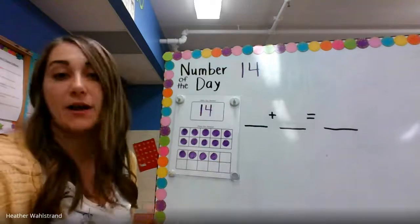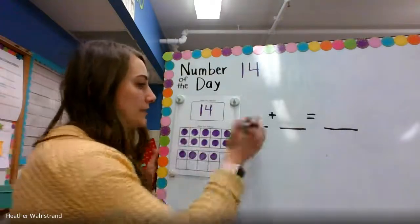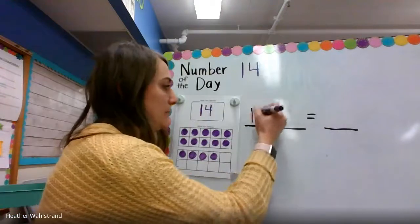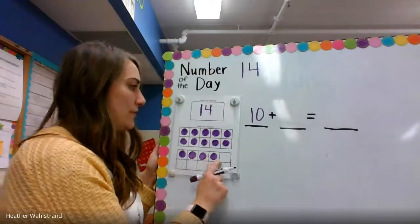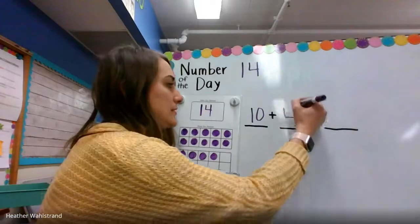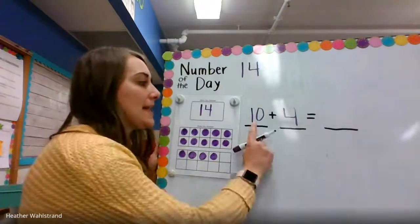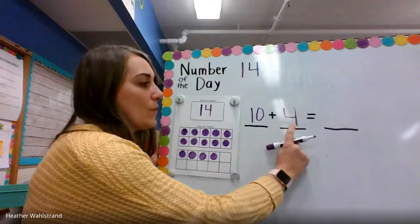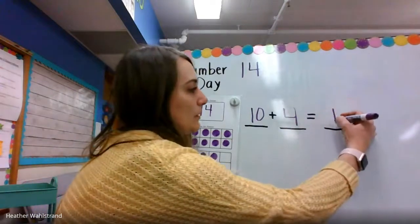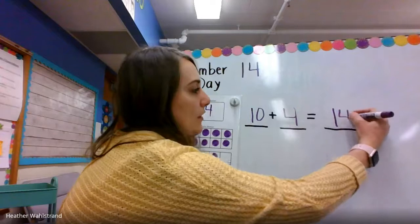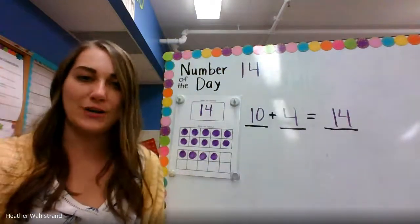So let's write our equation for 14. We have one group of 10, so I'm going to write in my 10, and one, two, three, four extra ones. And we can say 10 plus four equals one group of 10 and four extra ones, which is 14.